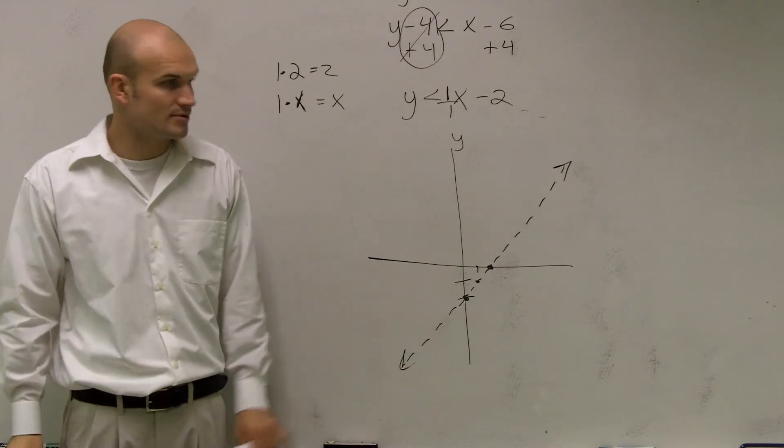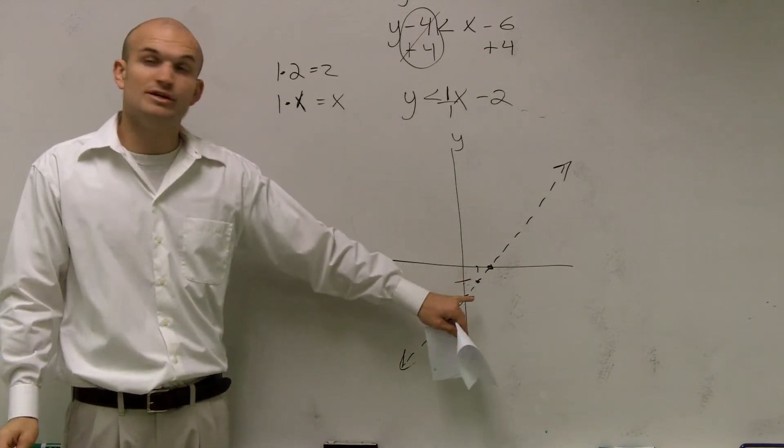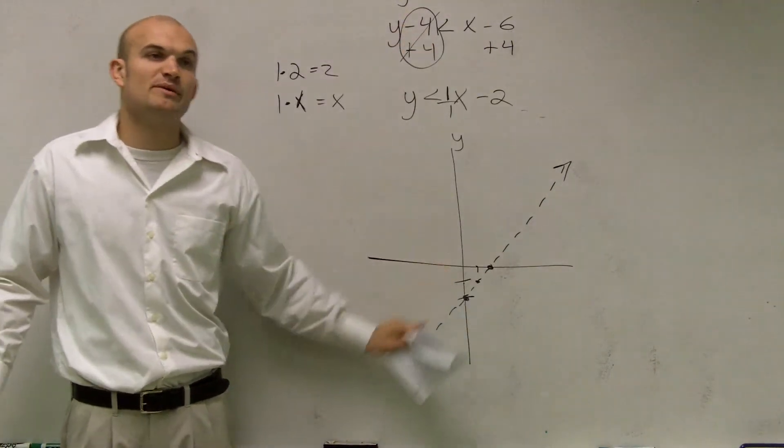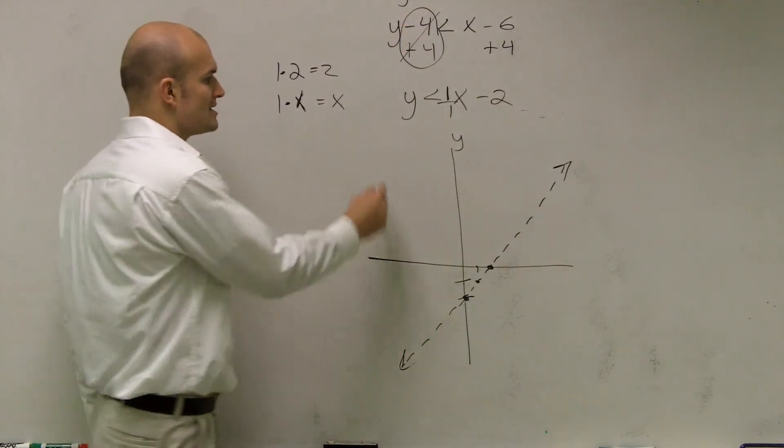All right? Then, now we have our points, right? We found our y-intercept. We used our slope to get to our next point. We used the inequality sign to determine if it's solid or dashed. And now, all we need to do is test it.